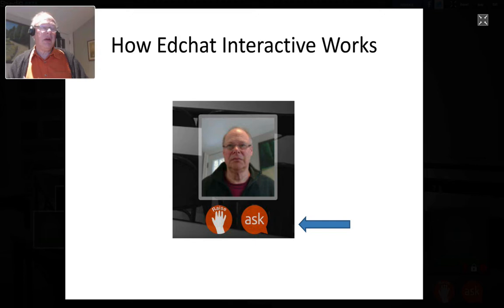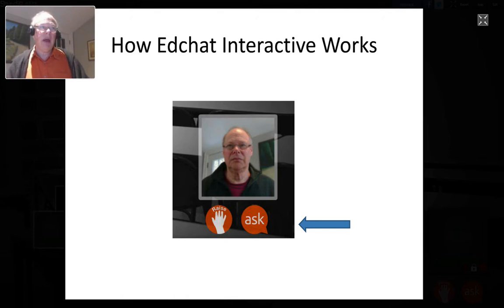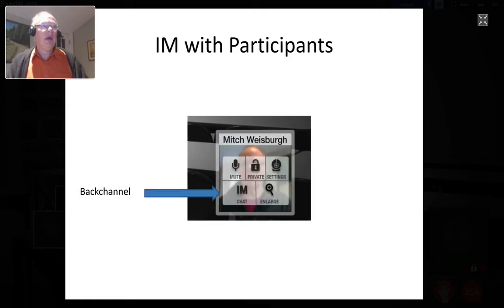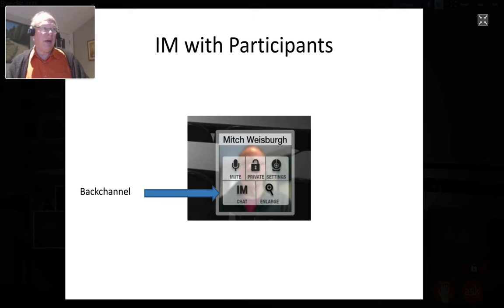There are a number of ways you can interact using Shindig. One is raising your hand, which lets me know you'd like to be called on and perhaps brought up to the stage — that's the raise hand icon underneath your avatar. There's also the ask button: if you have a question for Howie, click ask and it will pass the question on to him. The third way is through back channels — you can communicate with other people in your room.